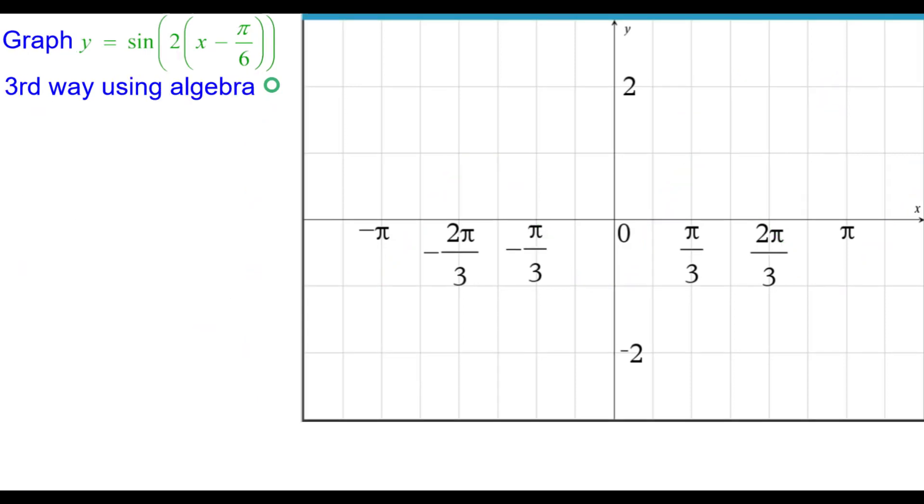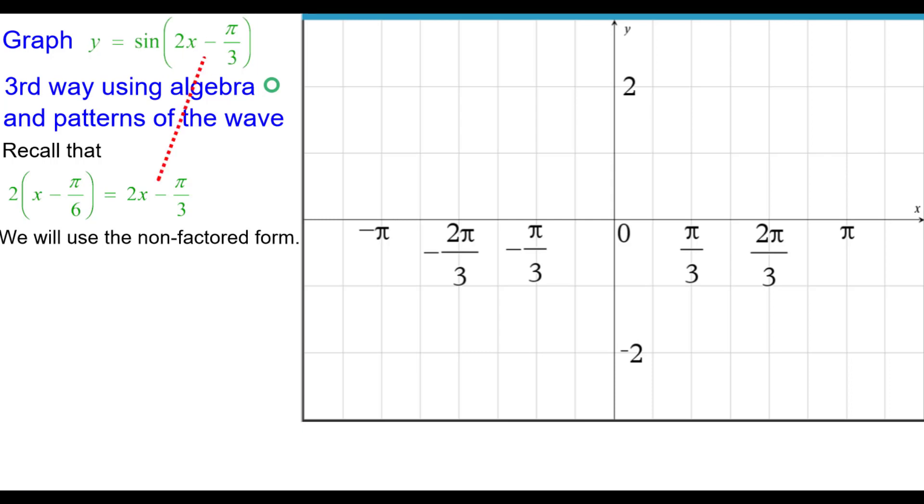Now the third way uses algebra and recognizing patterns of the wave. So recall that we can multiply that 2 throughout and go back how the problem was originally done. We're going to use the non-factored form here. They are equivalent forms.